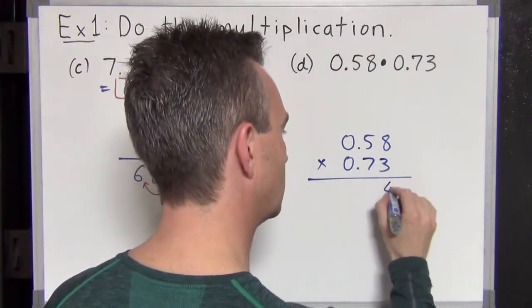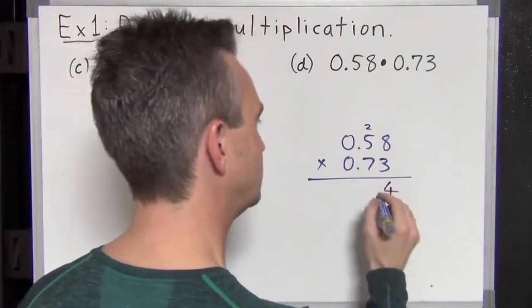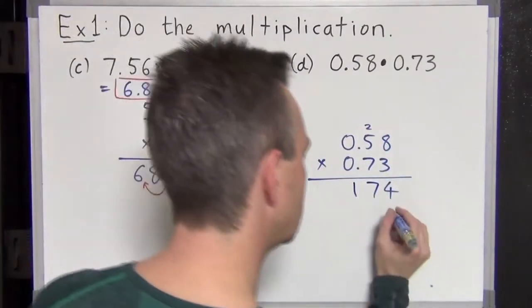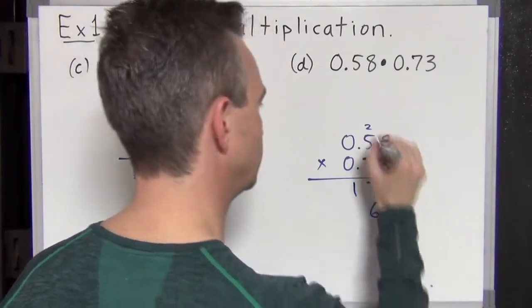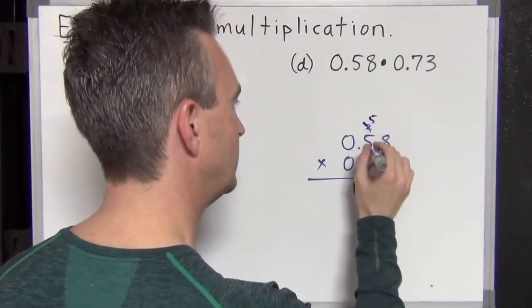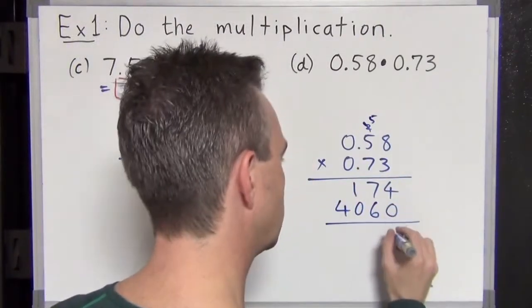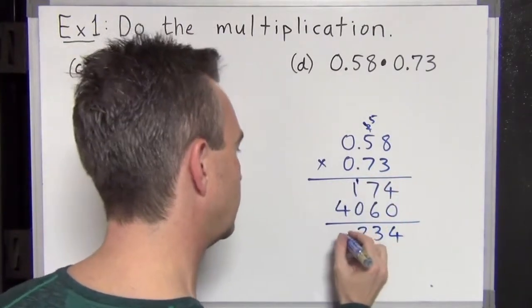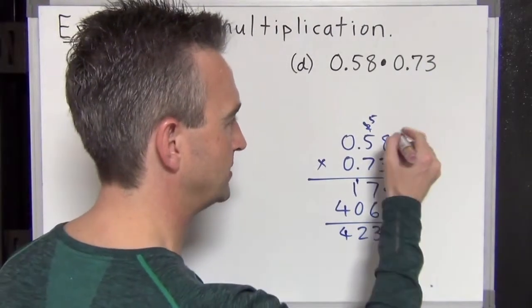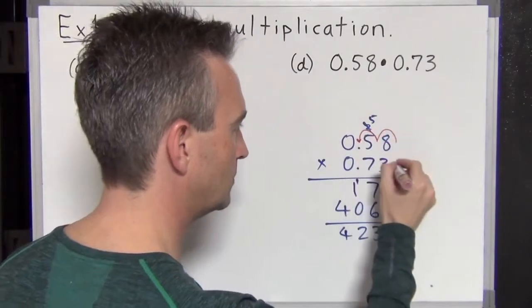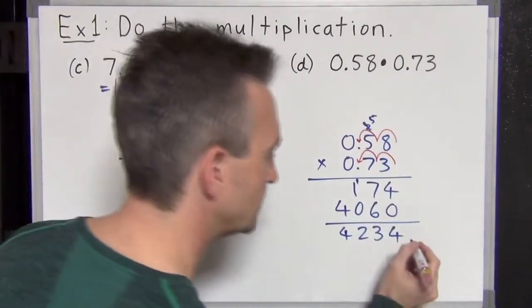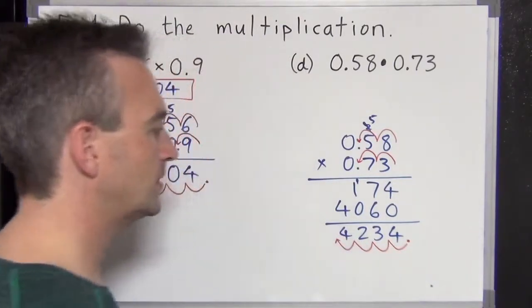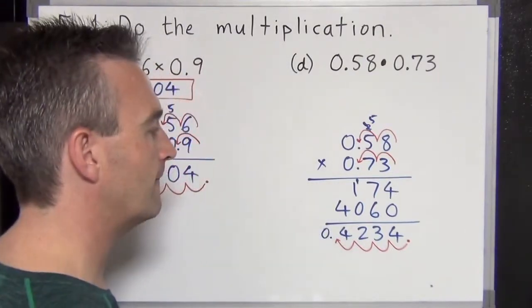Three eights are 24. Four goes down and carry the two. Three fives are 15. Carry the two is 17. And no need to carry the one there, just 17. Zero comes down. Seven eights are 56. Six goes down. Carry the five. Seven fives are 35. Plus five is 40. Let's add these. Four plus zero is four. Seven plus six is 13. Carry the one. One plus one is two. Four plus nothing is four. There we go. But where does the decimal point go? Let's check it out. One, two, three, four. Four decimal places total. So we've got to put four decimal places down here. Starting from here. One, two, three, four. There it is. So our answer is going to be 0.4234.